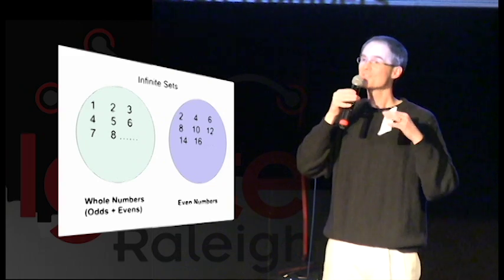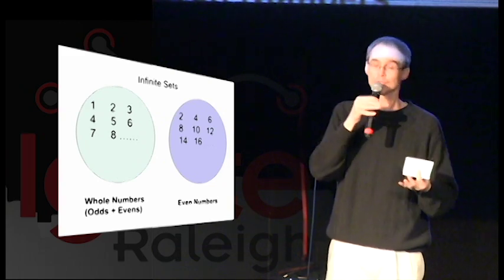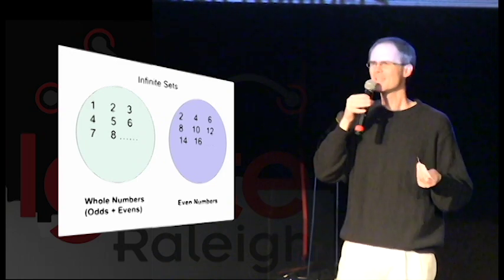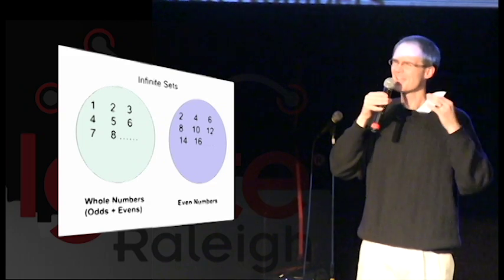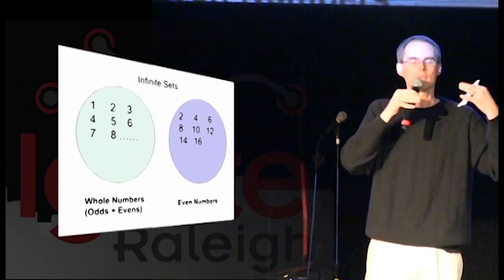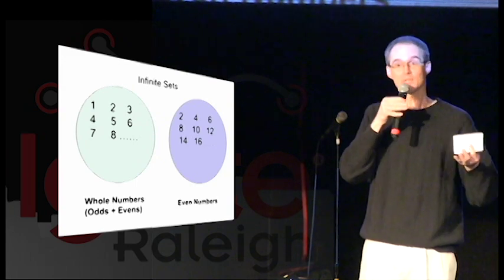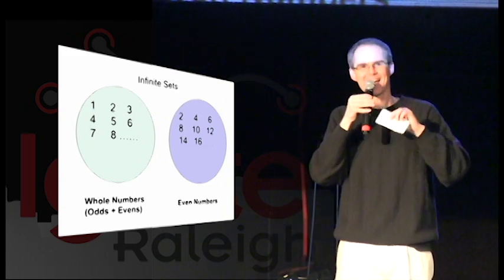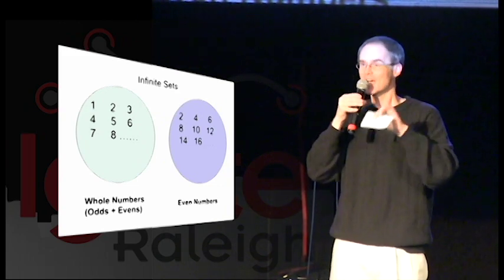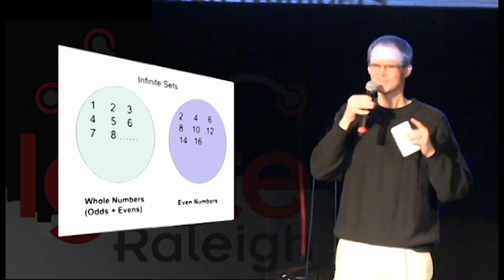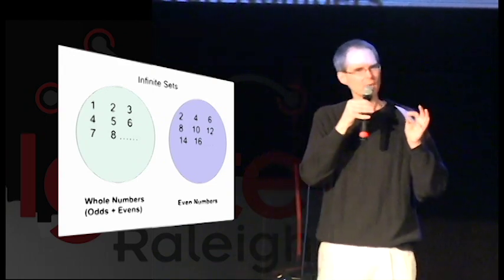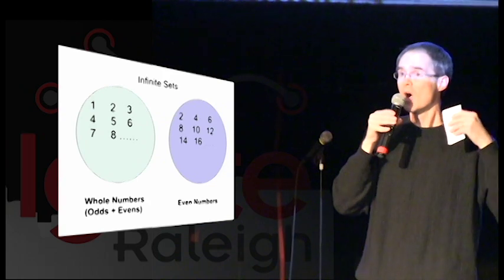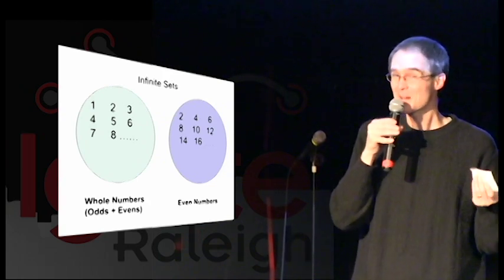He wanted to know, for example, was the size of all of the whole numbers greater than the size of the set of all of the even numbers? You might think, well, since the set of whole numbers is like all the even numbers plus all the odd numbers, then that set must be like twice as big as all the even numbers. Well, it turned out Cantor was able to prove that the size of the set of whole numbers was exactly the same size as the set of all of the even numbers. This kind of freaked out some of the other math people. But at first they shrugged and said, okay, so what — you're just saying all infinite sets are exactly the same size? That's kind of boring.